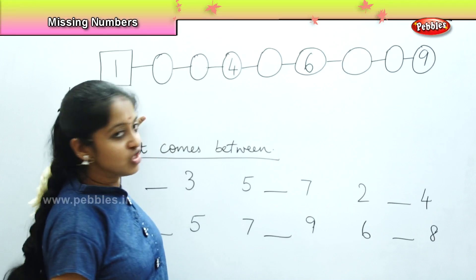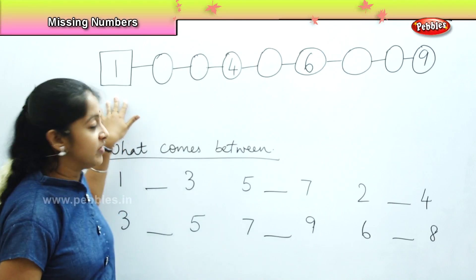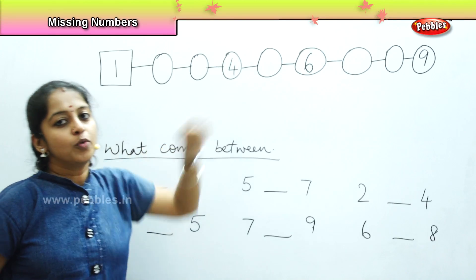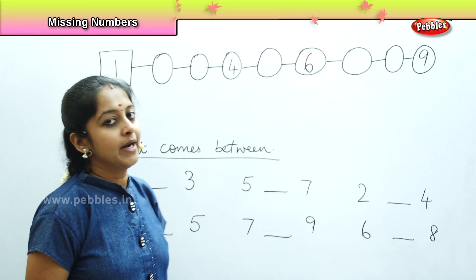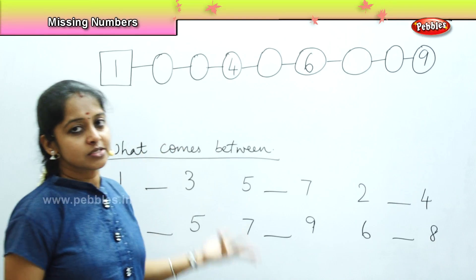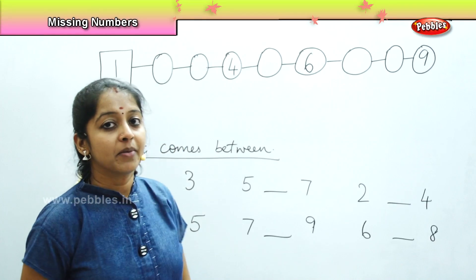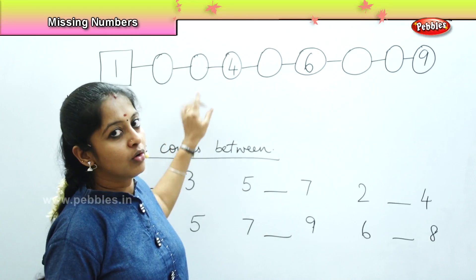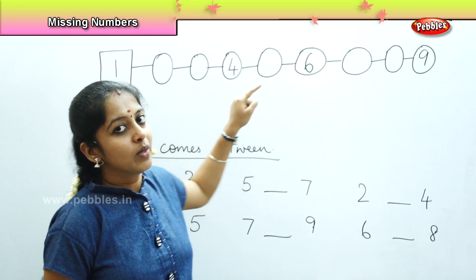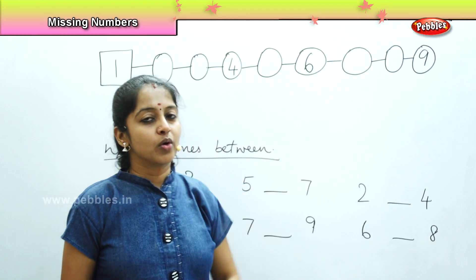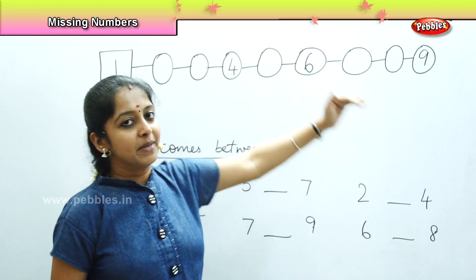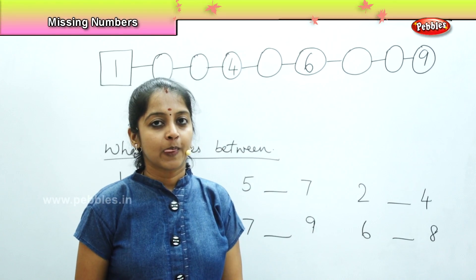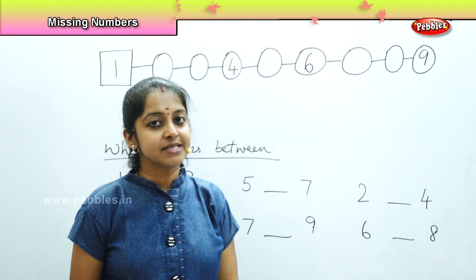I have an engine which has number 1 and there are few bogeys. But few bogeys do not have any number written on it. So we have to find out which number will come in which bogey and we need to complete this train. So shall we begin?